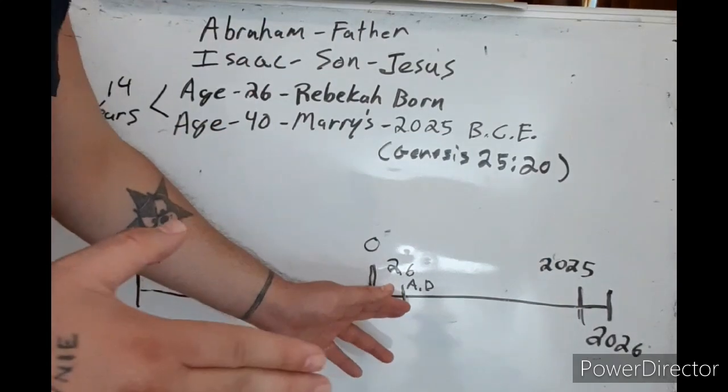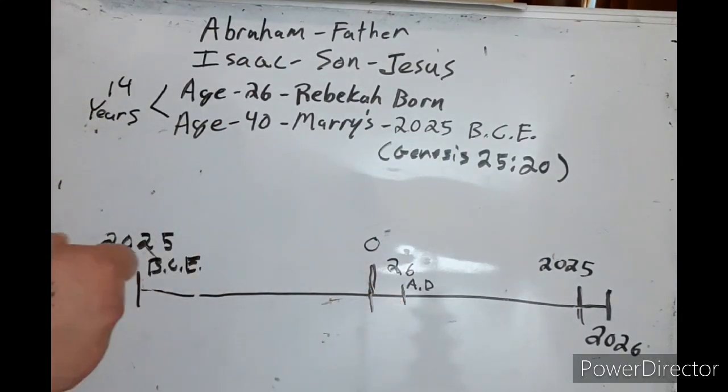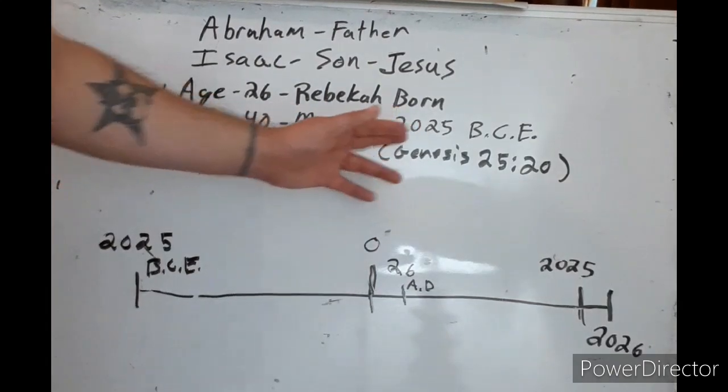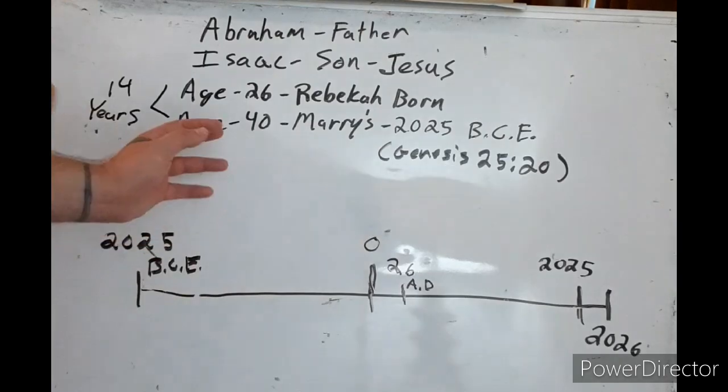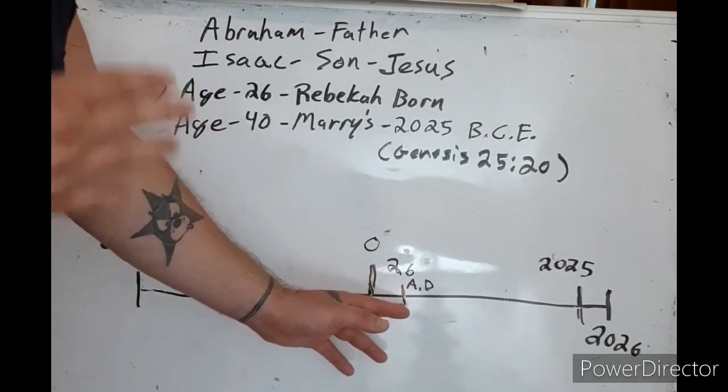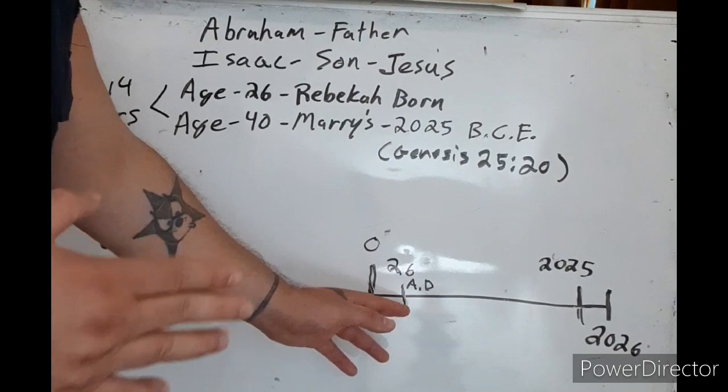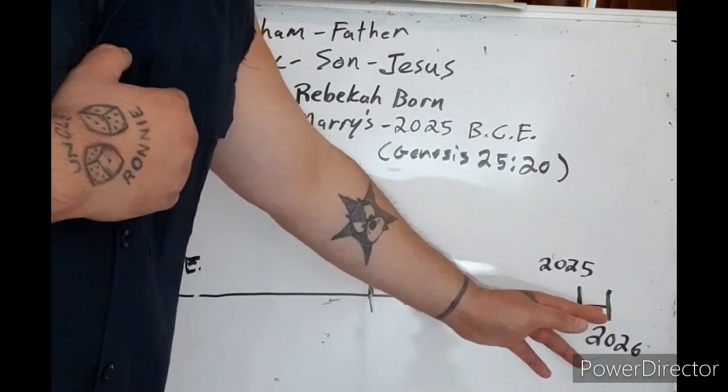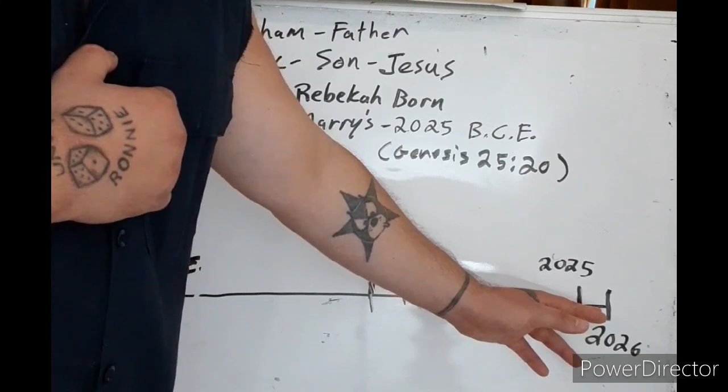Then at age 40, Isaac marries Rebecca. Now this 40 is 40 jubilees, which is 2000 years from 26 AD to 2026 AD.